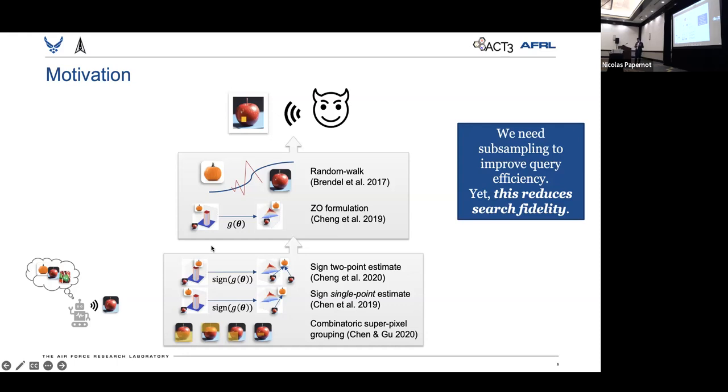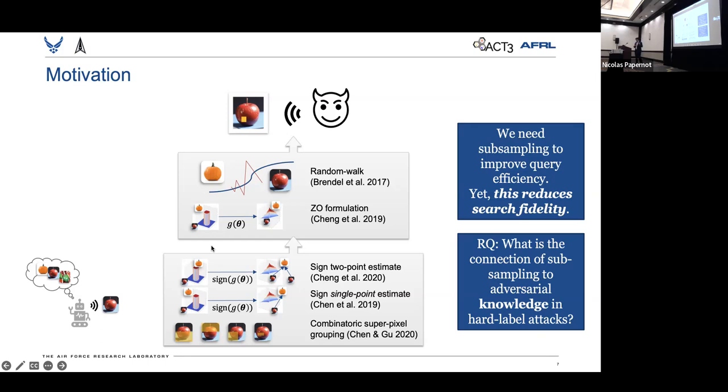Our initial intuition was to consider the model manifold, since it's known that standard ConvNets can actually encode data image datasets into low-dimensional latent representations. This brings us to the main research question of our paper, which is: what is the connection between subsampling and the adversarial knowledge in these hard-label attacks?